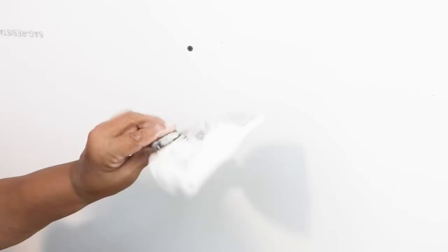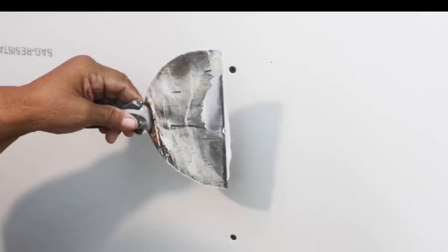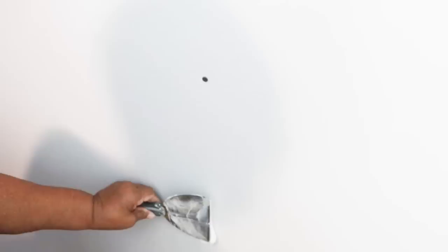When it comes to covering up the screws, what you want to do is take your mud like this and lay it on the side. You want to start at the lowest possible screw, and then you just want to slide on up, and then you come right straight down.